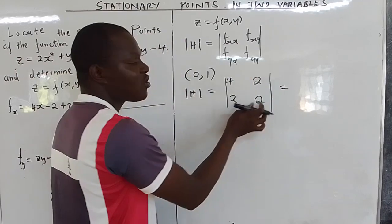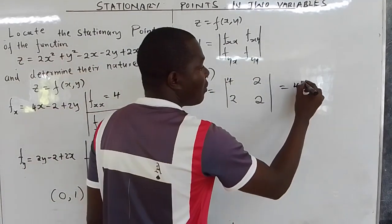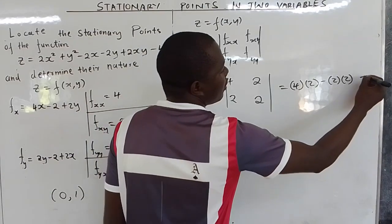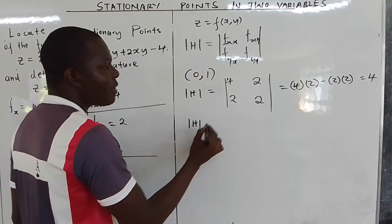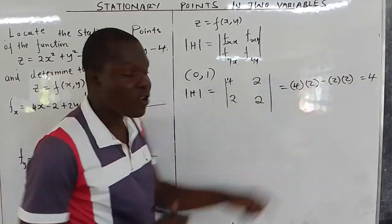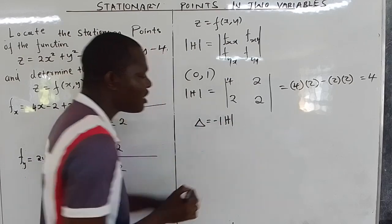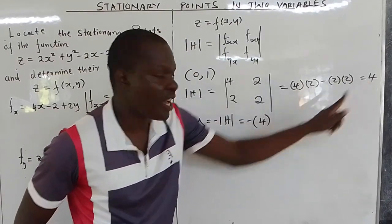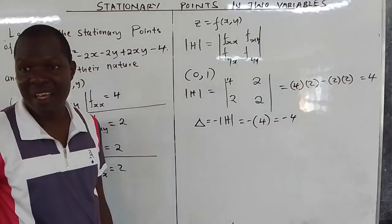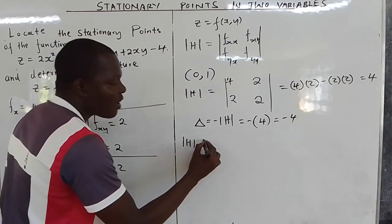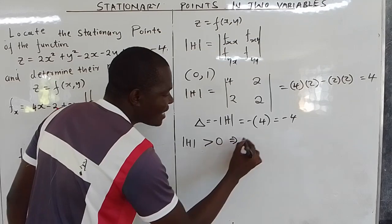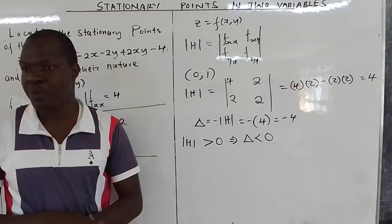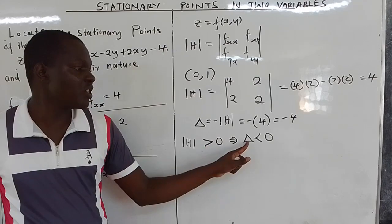The determinant is the product of the main diagonal minus the product of the other diagonal: (4)(2) minus (2)(2) equals 8 minus 4 equals 4. Now the discriminant is defined as the negative of the determinant of the Hessian matrix. So the discriminant equals negative 4. Since the determinant of the Hessian is greater than 0, the discriminant is less than 0.